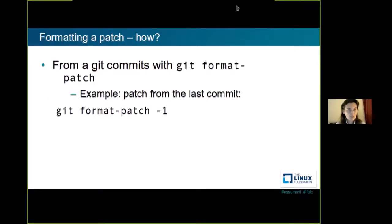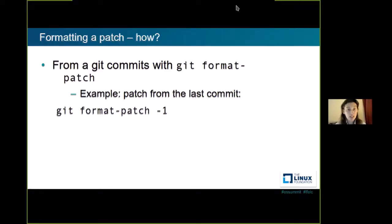Now, how to format your patch. You format the patch with `git format-patch`. For example, if you want to create a patch file from the last commit, use `git format-patch -1` and it will create a file with it. You can create a patch from any commit. And there is one more thing to add apart from your fix itself: the commit message.